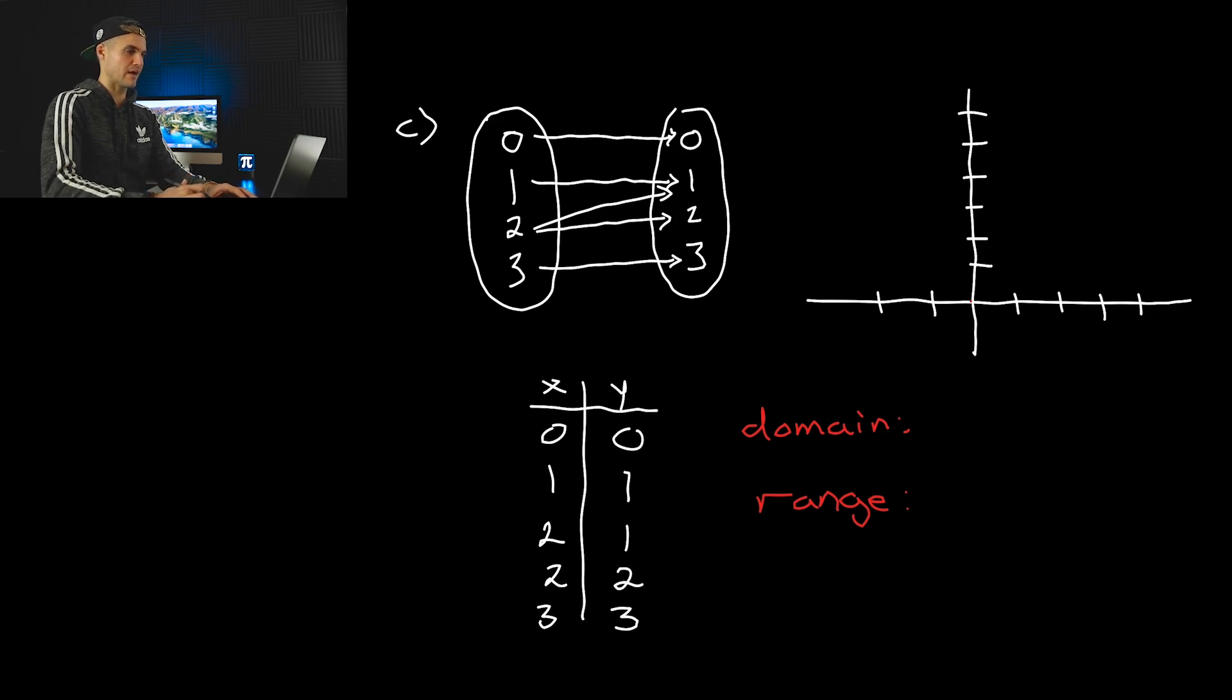But we will see it more clearly once we plot these. So we have the table of values. Let's go into plotting these. We got zero and zero. We have one and one, two and one, two and two, that's where that vertical line test is going to fail. And then we have three and three.